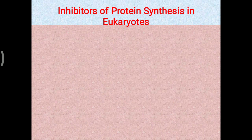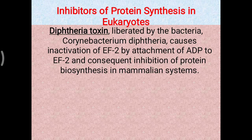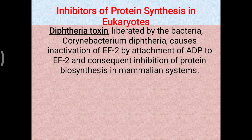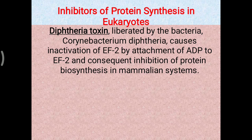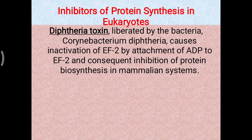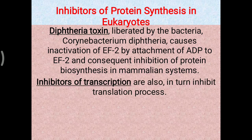One clinically relevant condition is diphtheria toxin, which is liberated by the bacterium Corynebacterium diphtheriae, causing inactivation of elongation factor 2 (EF-2). EF-2 is needed for the translocation process; the toxin inhibits it by attaching ADP-ribose to EF-2, resulting in inhibition of protein biosynthesis in the mammalian system. As a result, the affected cell is not able to form protein, explaining the signs and symptoms of diphtheria.